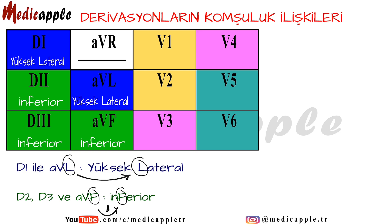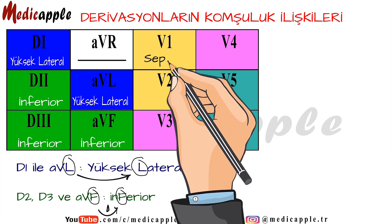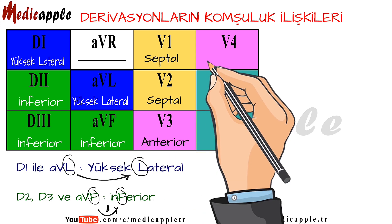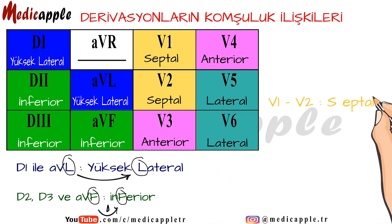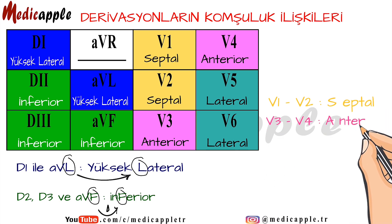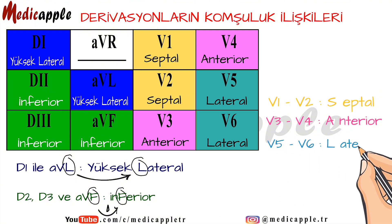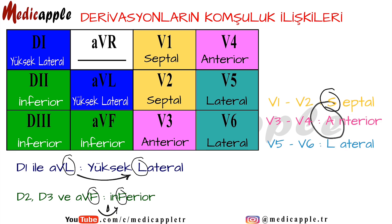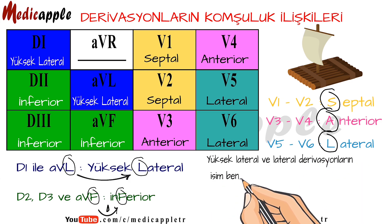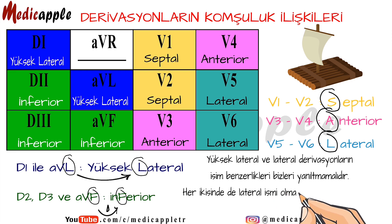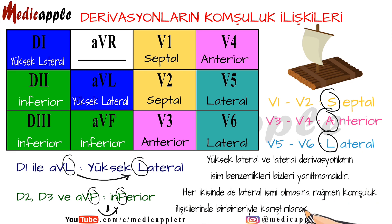AVR's evaluation will be explained in our Introduction to ECG Part 2 video. Neighborhood relations in the precordials can be abbreviated as SAL from the initials. The similarity of names of the higher lateral and lateral derivations should not mislead us — although both have the name lateral, they cannot be evaluated by mixing them with each other in neighborly relations.